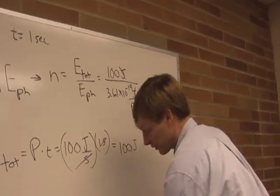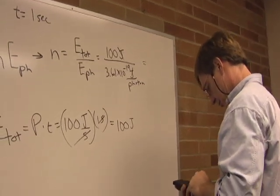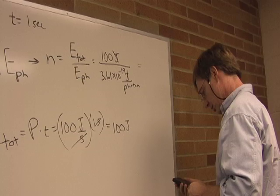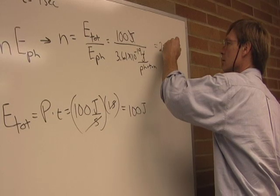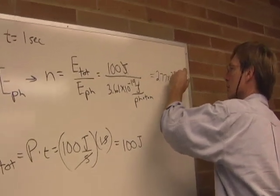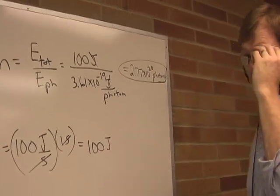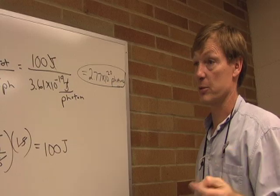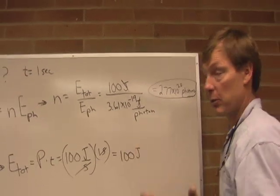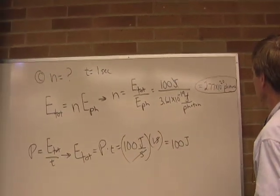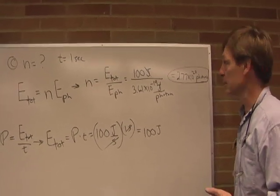And that's going to be a mess. That's going to be 2.77 times 10 to 20. Now, I used an average wavelength for an incandescent bulb, which puts out a broad spectrum. But a 100 watt bulb in one second is putting out roughly, roughly about 300 billion, billion photons every second. Pretty amazing.